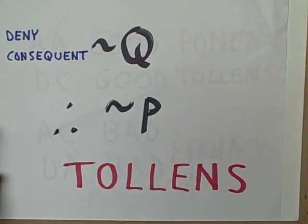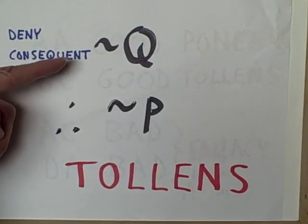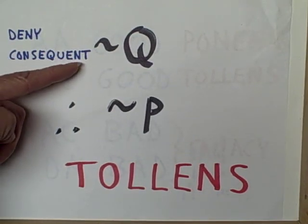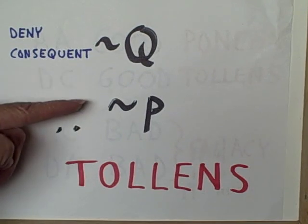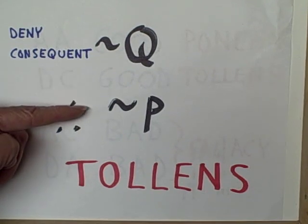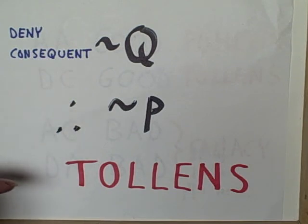However, let's try it this way. Let's deny the consequent. Suppose we see that Q does not exist — we may then figure that P does not exist. That's known as the modus tollens.